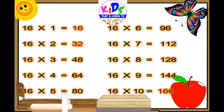Sixteen sixes are 96. Sixteen sevens are 112. Sixteen eights are 128. Sixteen nines are 144. Sixteen tens are 160.